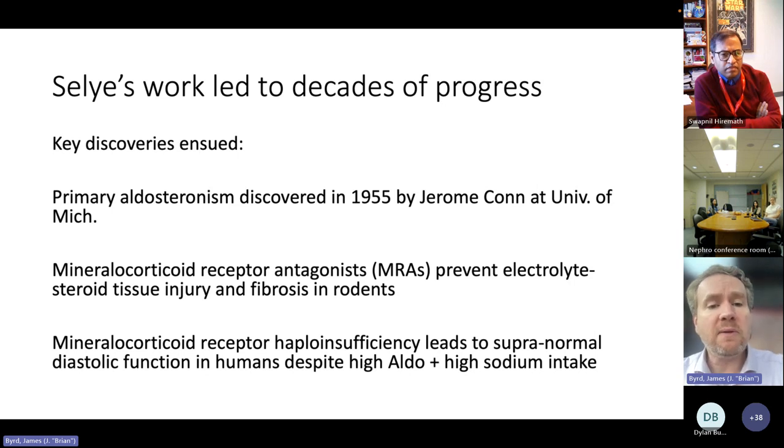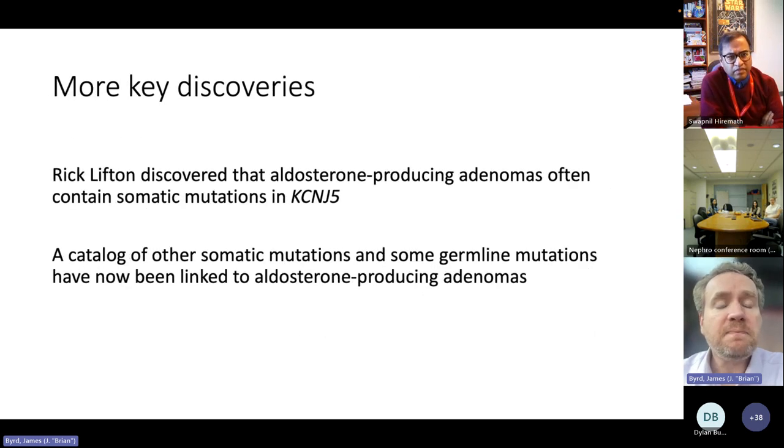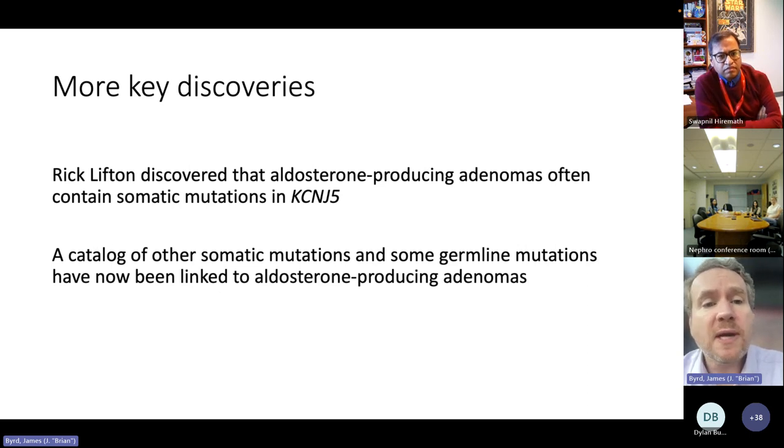That work led to decades of progress, including primary aldosteronism having been discovered in 1955 by Jerome Conn at the University of Michigan. Mineralocorticoid receptor antagonists were developed and shown to prevent electrolyte steroid tissue injury and fibrosis in rodents. There was a nice study from France showing that mineralocorticoid receptor insufficiency in humans leads to supranormal diastolic function, suggesting that the mineralocorticoid receptor signaling itself is central to the pathology.